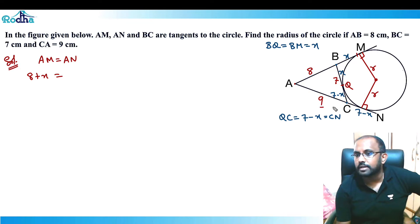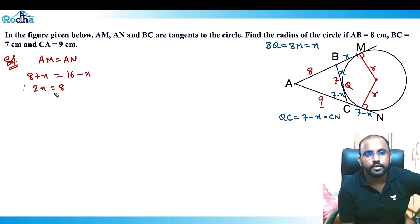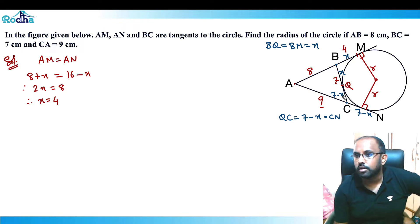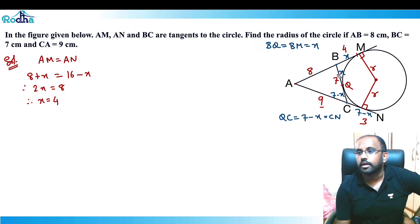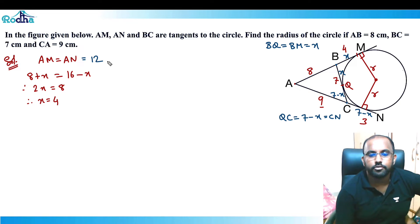AM = 8 + x and AN = 9 + (7 − x) = 16 − x. Setting AM = AN gives 8 + x = 16 − x, so 2x = 8, therefore x = 4. Thus BM = 4, QC = CN = 3, and AM = AN = 12.